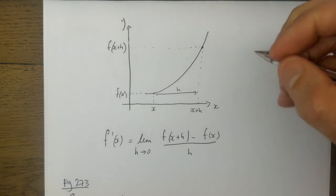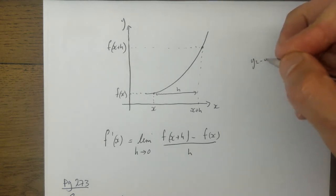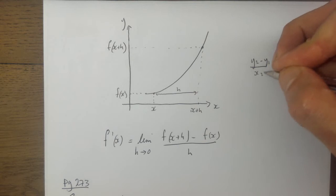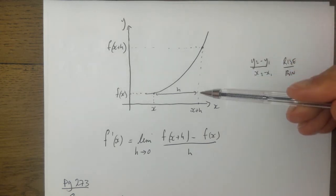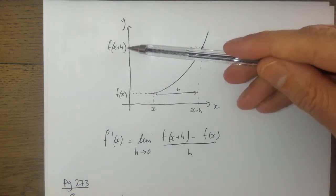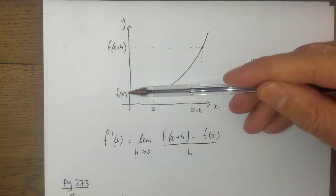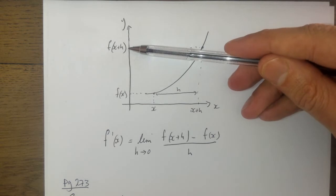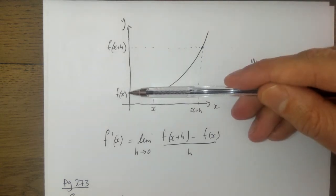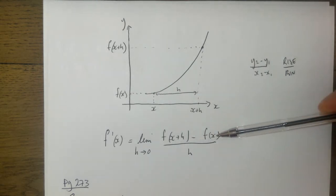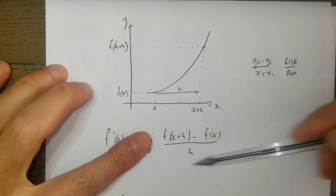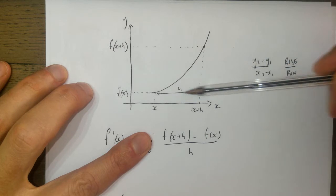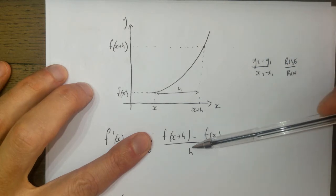In terms of the slope equation we learned previously: y2 minus y1 over x2 minus x1, or as we otherwise know it, rise over run. The rise is f of x plus h take away f of x, and the run is h. So that's basically what this formula is - a function version of rise over run.